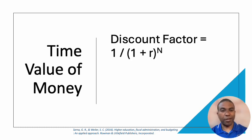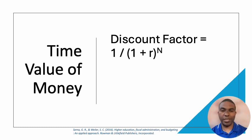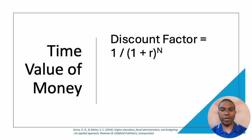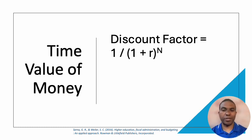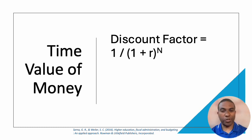They also discuss what's called the discount factor — essentially the variance between the present value and the future value. You take one and divide it by one plus the market interest rate, raised to the power of the number of discount periods. So for a three-year project, it would be one plus R to the third power. Again, I'm not going to grade you on the math — I'm just exposing you to the formula.